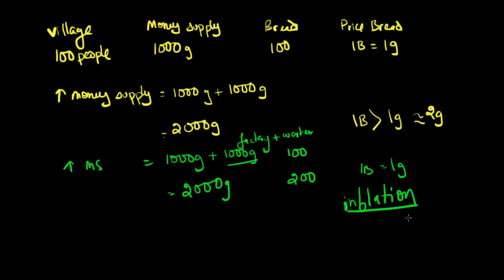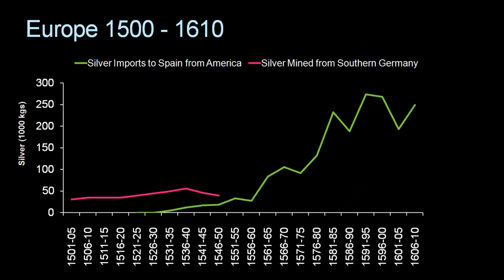A very famous example of inflation being caused by increased money supply happened in Europe from about the early 1500s to the 1600s. Let's take a look at a few charts. During the 1500s, the commonly used currency in Europe was made out of silver. Over this time, there was a large increase in the supply of silver in Europe. The reason for this was twofold.